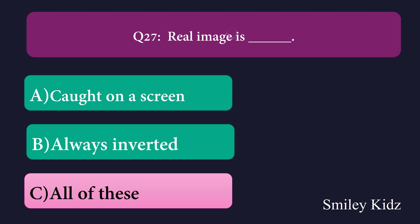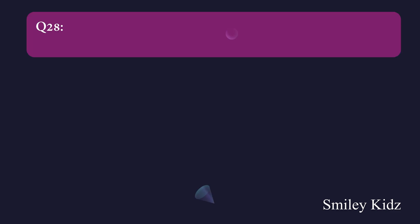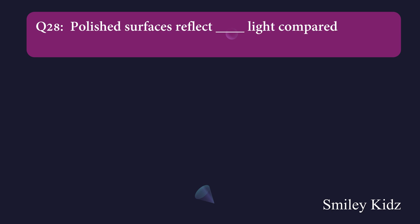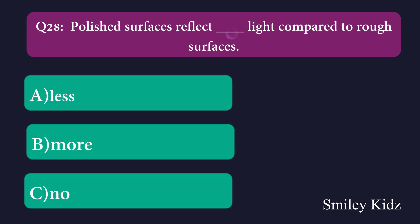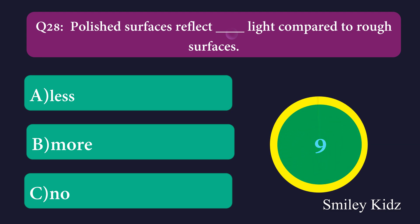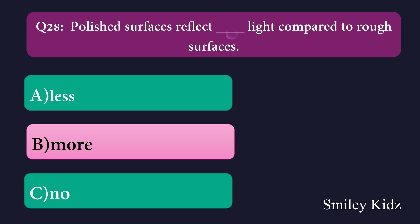Question number twenty-eight: Polished surfaces reflect dash light compared to rough surfaces. Option A: less, Option B: more, Option C: no. The right answer is more. Polished surfaces reflect more light compared to rough surfaces.